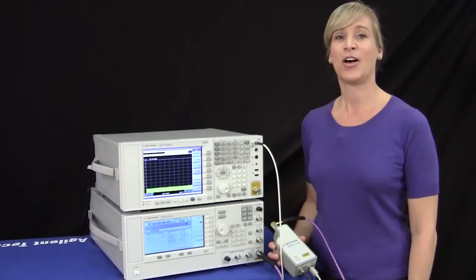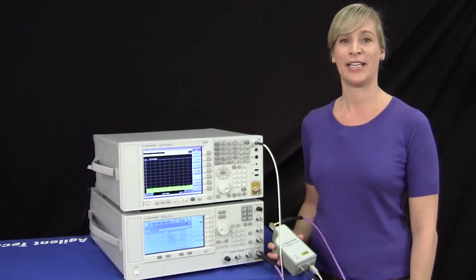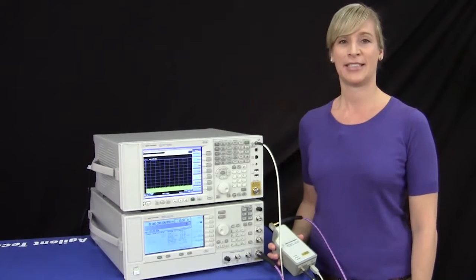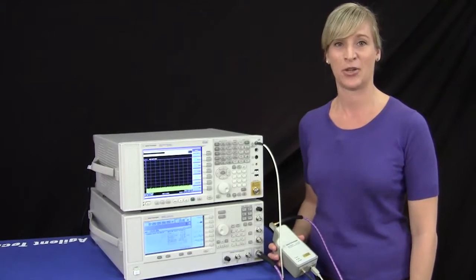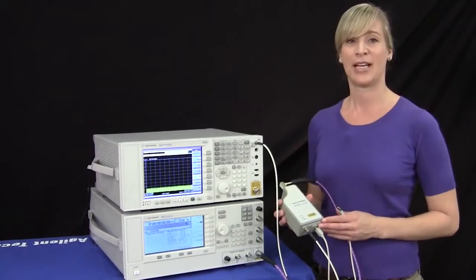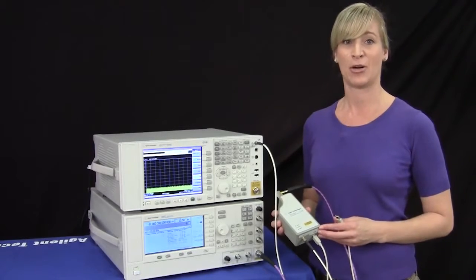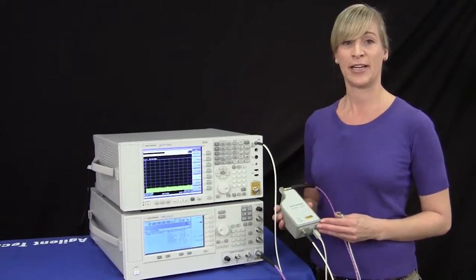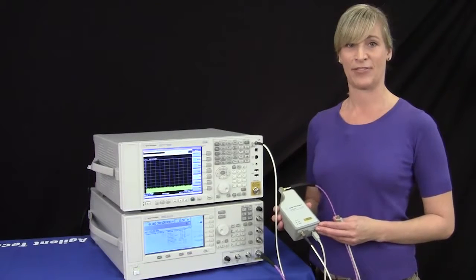For my next demonstration I'll show you the new millimeter wave EXA's performance at 67 gigahertz using our external mixing option. To the setup we've added Agilent's M1970V waveguide harmonic mixer with frequency coverage from 50 to 75 gigahertz.